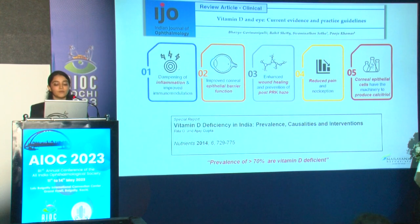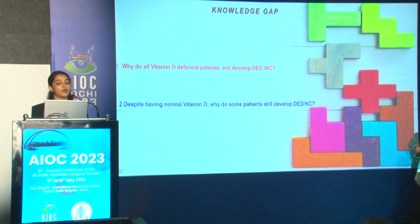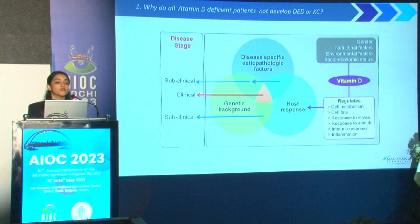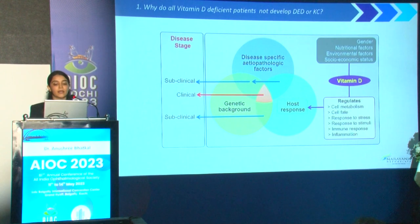The prevalence of vitamin D deficiency in India is noted to be more than 70%. But still, why do not all vitamin D deficient patients develop dry eye disease or keratoconus? For any disease to manifest, three factors should come into play: the etiopathological factors of the disease, the genetic background, and the host response.